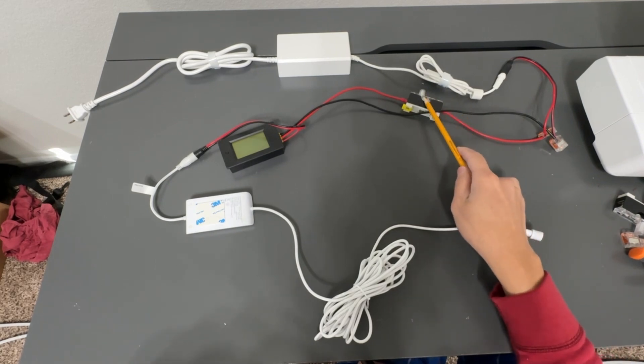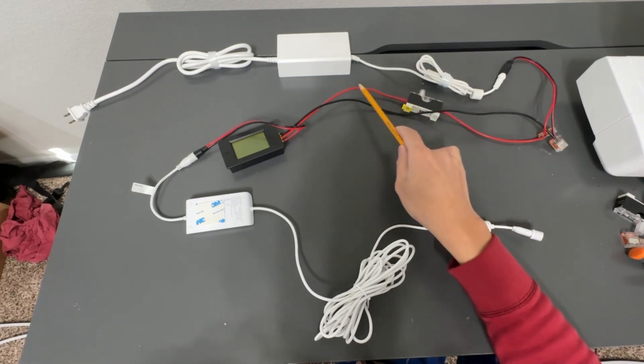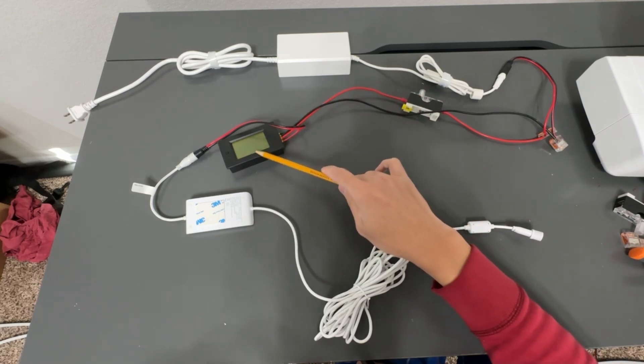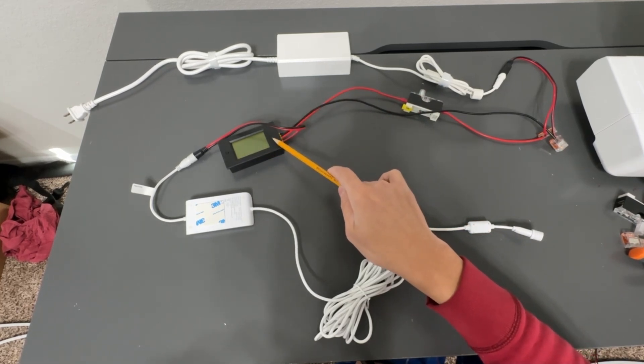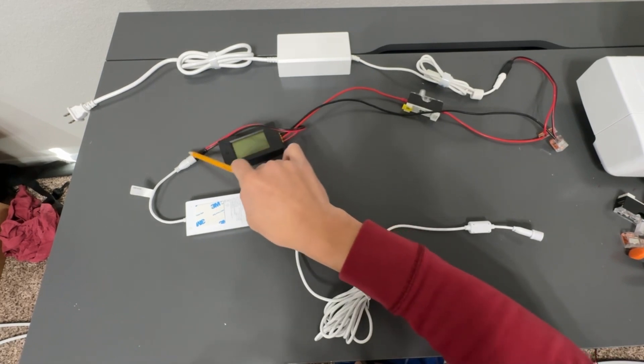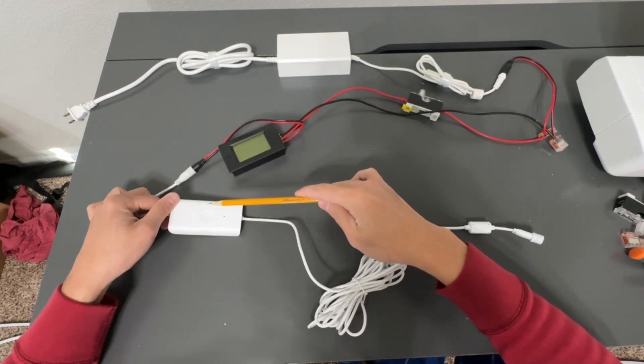It goes all the way to the fuse right here, where the tip of the pencil is at. And then from there, it's going to go to the power monitor. And from the power monitor, it's going to go to the controller right here. That's the controller right there.